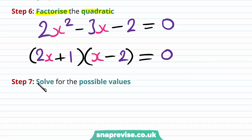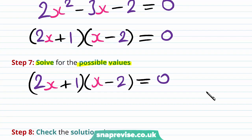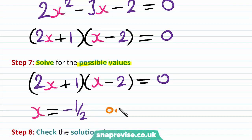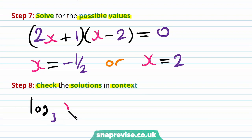Our seventh step is to solve for the possible values. We have the equation 2x plus 1 multiplied by x minus 2 is equal to 0. Therefore, the possible values are going to be x equals minus 1 half, or x equals 2. Our eighth step is to check the solutions in context. Recall that our equation has the terms, initially, the log base 3 of x as well as the log base 3 of 2x minus 3.